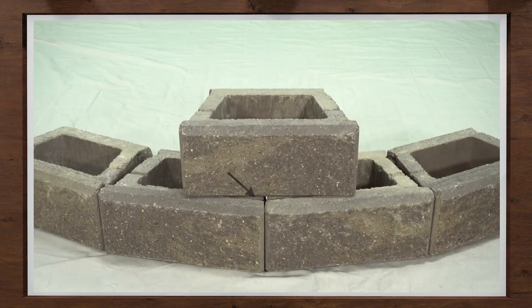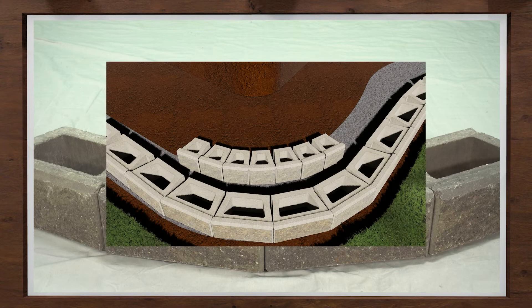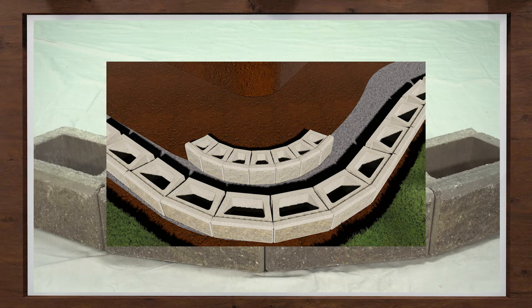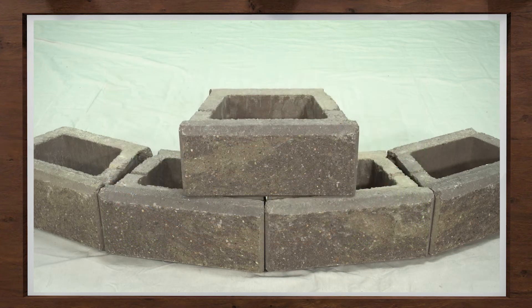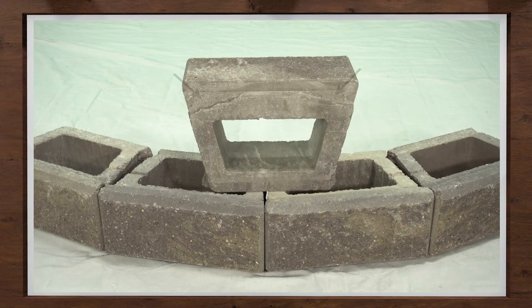On occasions where a tighter curve or radius is needed to remove any gaps that may appear in the front of the wall, there are a couple options. Half-width blocks can be used instead if available, or modifications of the bottom notch will be needed. Again, this is for a tighter radius — not needed for standard typical curves.